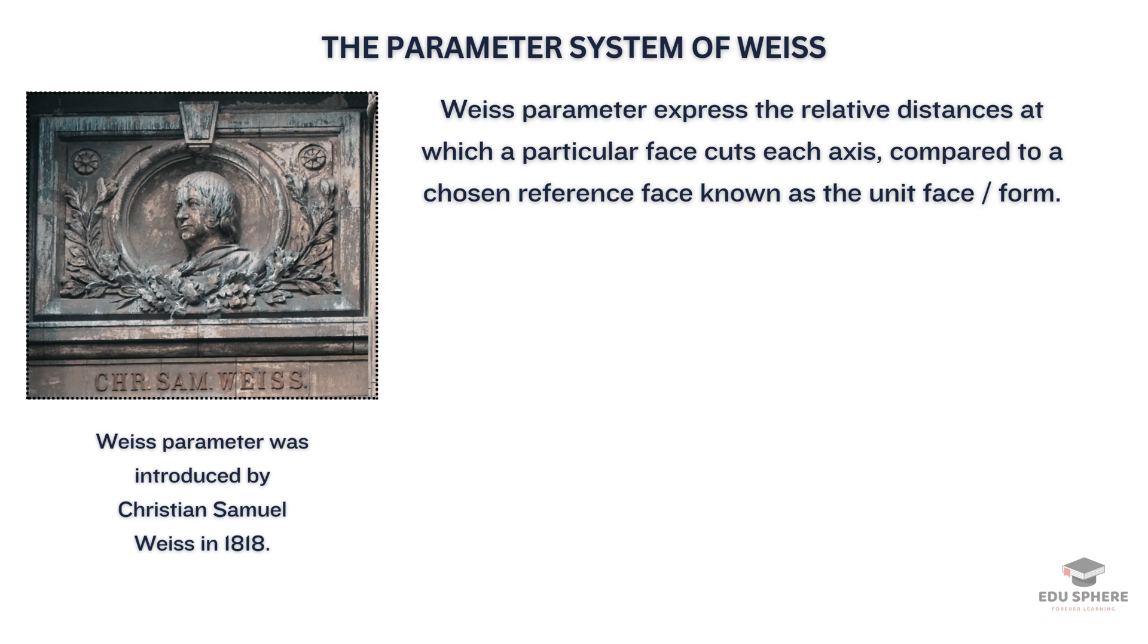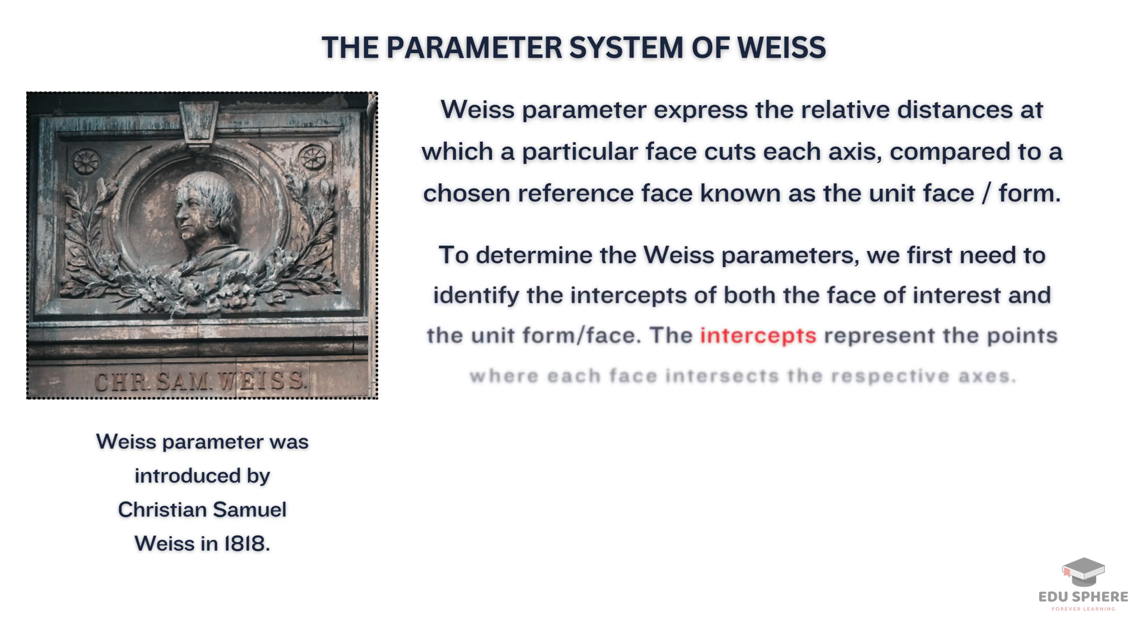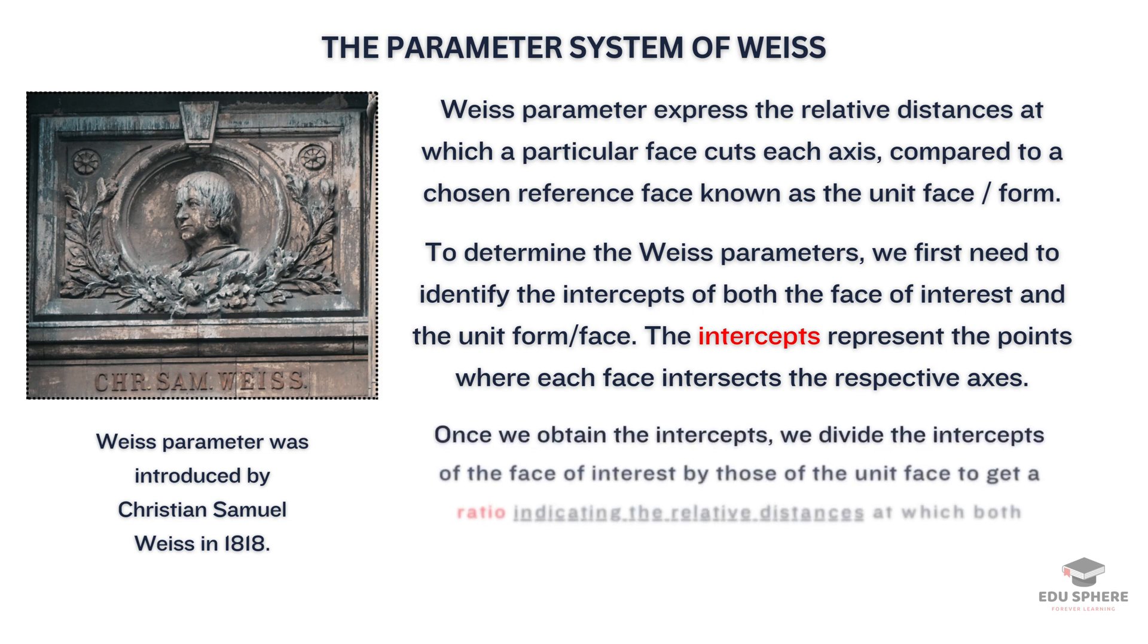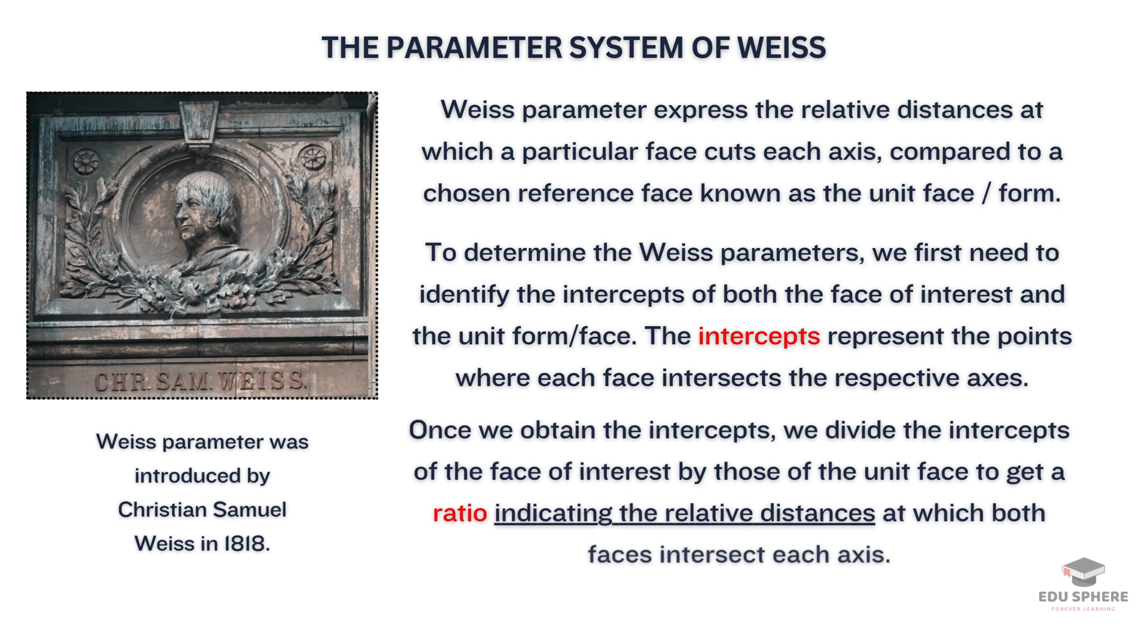To determine the Weiss parameters, we first need to identify the intercepts of both the face of interest and the unit form. The intercepts represent the points where each face intersects the respective axes. Once we have these intercepts, we divide the intercepts of the face of interest by the corresponding intercepts of the unit face. This gives us a ratio that represents the relative distances at which the two faces cut each axis.